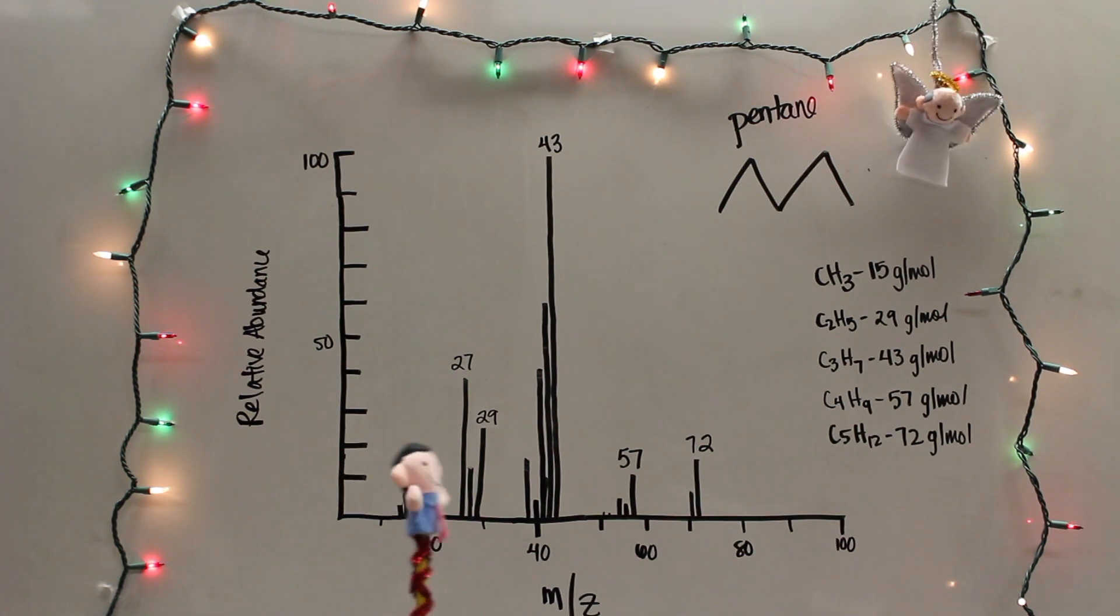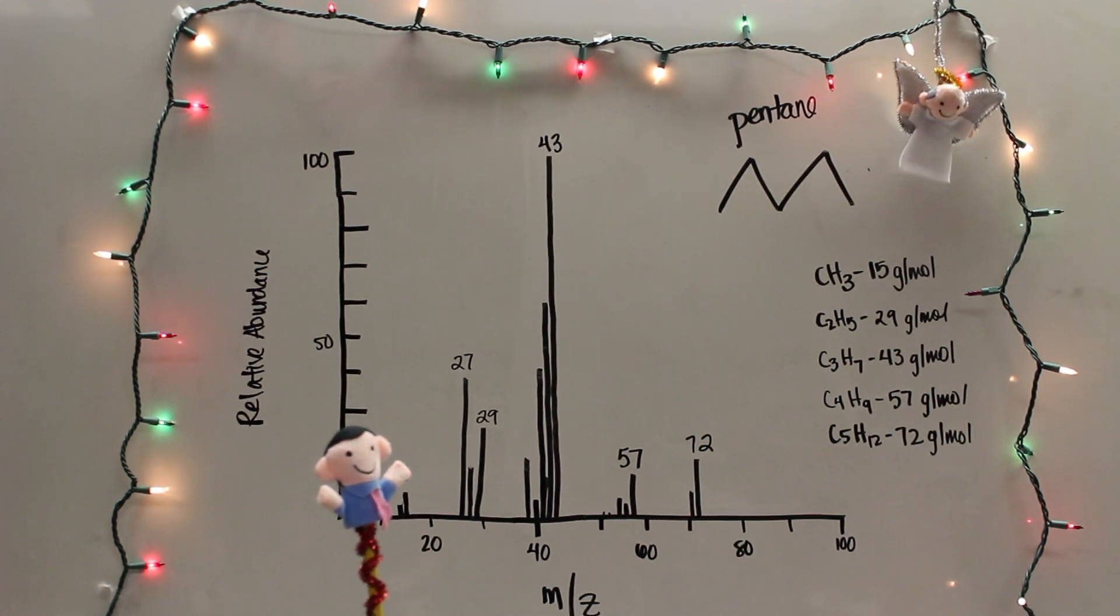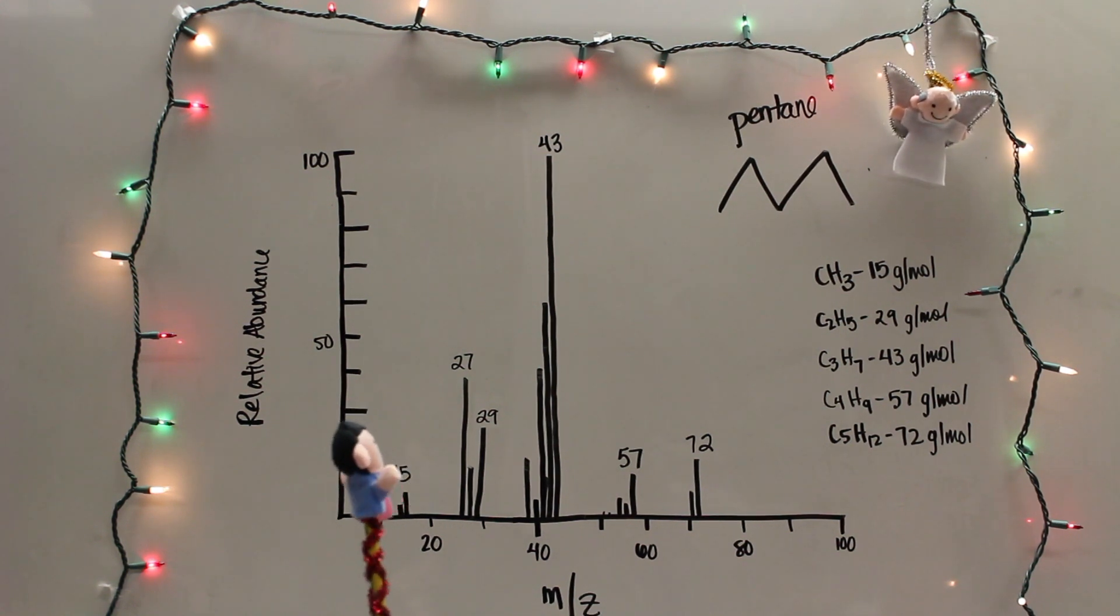Okay, so looking at this graph, we see 72 is the highest mass-to-charge ratio. That means that 72 would be the molecular mass of this compound, right? You're exactly right. Pentane has a molecular weight of 72 grams, which is what the sample molecule is.